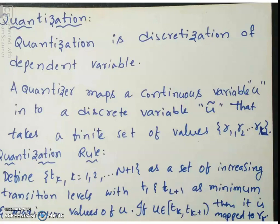Only the set of values from r1 to rl are allowed for u tilde, whereas u can take any real value. So what is the quantization rule? We will define a set of thresholds or transition levels tk, where k equals 1, 2, and so on up to l plus 1 — a set of increasing transition levels with t1 and tl+1 as the minimum and maximum values of u, meaning u belongs to the range t1 to tl+1.